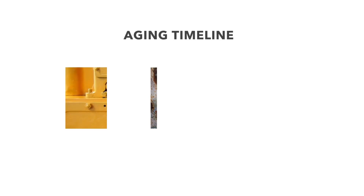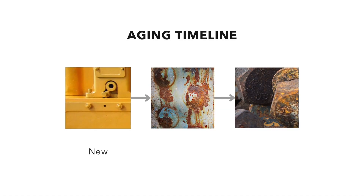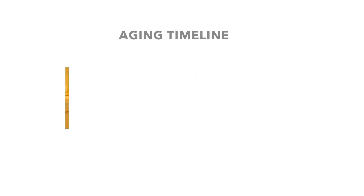Another tip: reference age range. Don't just get one ideal photo — get a clean, a midwear, and a fully destroyed version of the same material. That gives you a timeline and you can decide where your asset sits in that life cycle.